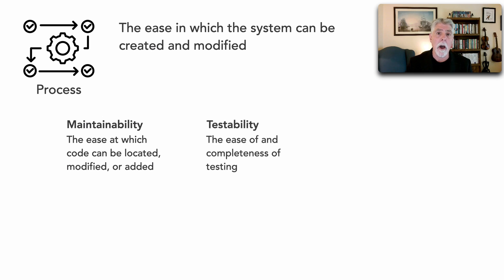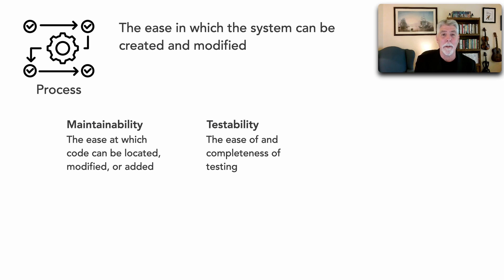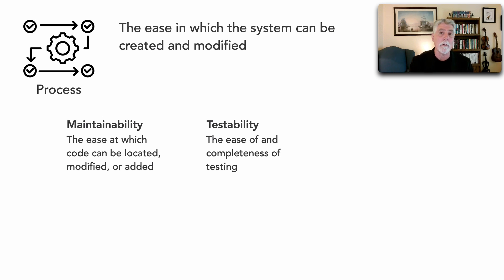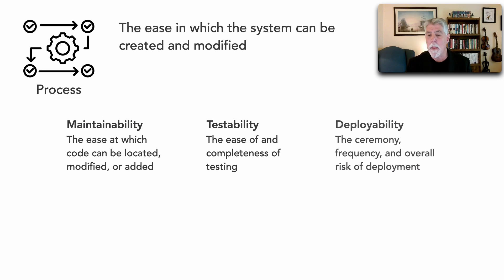Testability is a very common one as well — the ease of testing, but also more importantly the completeness of testing, which is definitely an architectural concern. Think about a monolithic system and the completeness of testing versus a microservice with a single purpose — that's a good example of where this architectural characteristic varies based on architectural style and structure. Deployability is another common one, described by the ceremony, frequency, and overall risk associated with deploying our software.